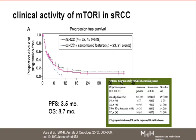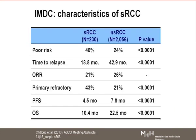Progression-free survival is 3.5 months and overall survival is 8.7 months with mTOR inhibitors — still within the range of other therapies. The IMDC data on sarcomatoid versus non-sarcomatoid RCC shows it is a rare entity at about 10 percent of the total population. It is associated with poor risk, earlier recurrence, a higher fraction of primary refractory tumors, and progression-free survival and OS are about half of what you would expect from non-sarcomatoid patients.